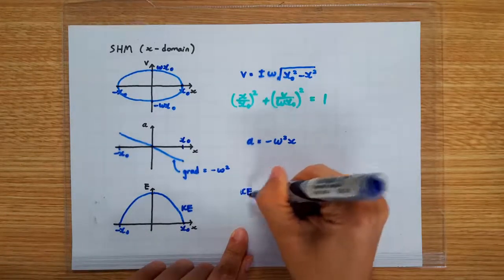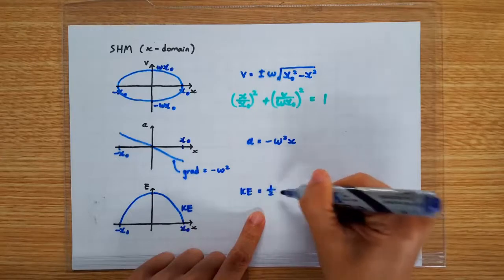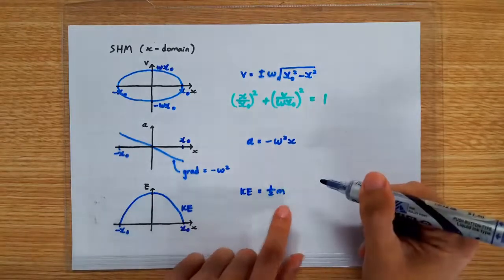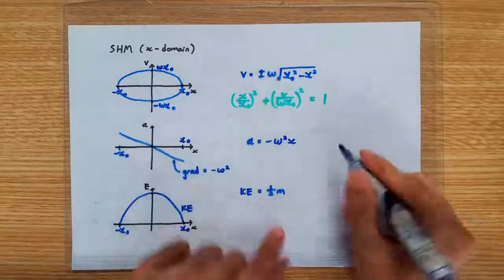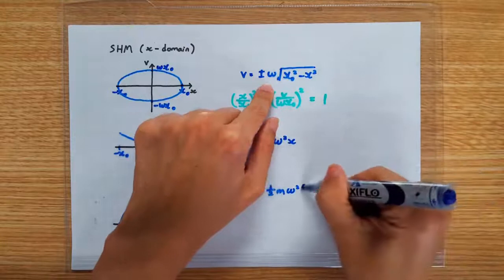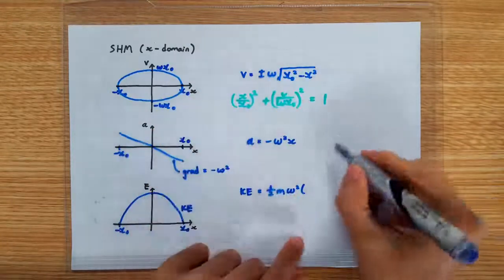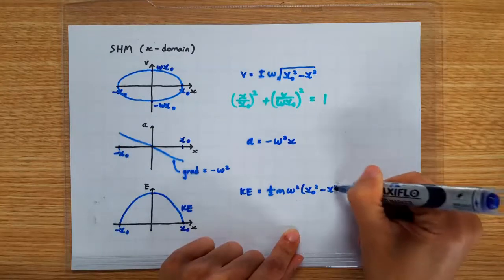We actually know the exact formula for the KE graph. Remember KE is half mv square. So half mv square. So square this term, we are going to get omega square. And the square is going to remove the square root. So it's going to be just x0 square minus x square.